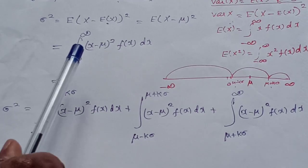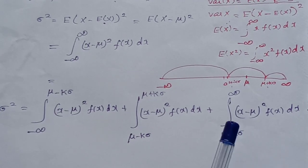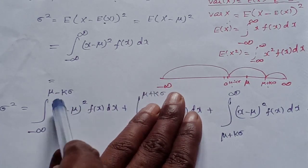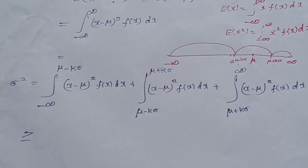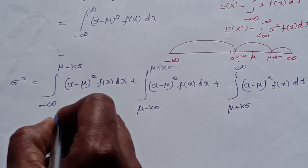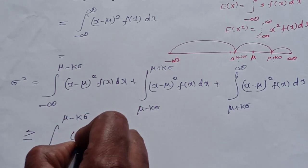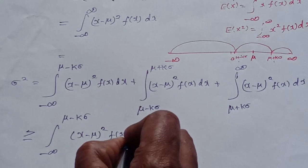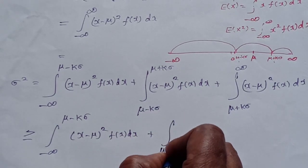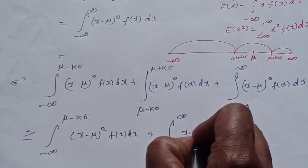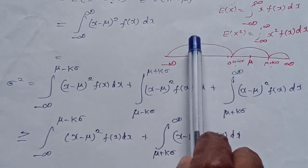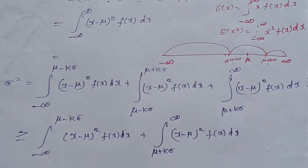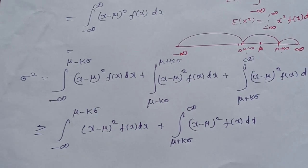The three integrals are split. Now, the middle integral is non-negative (since (x minus mu)² f(x) is non-negative), so we can drop it. Therefore sigma squared is greater than or equal to the integral from minus infinity to mu minus k sigma of (x minus mu)² f(x) dx plus the integral from mu plus k sigma to plus infinity of (x minus mu)² f(x) dx.